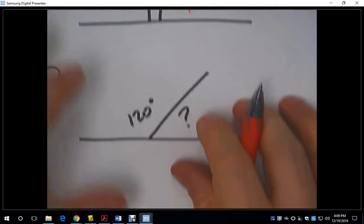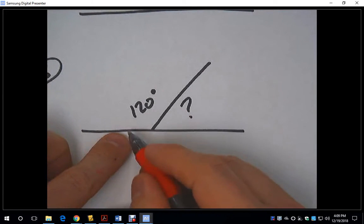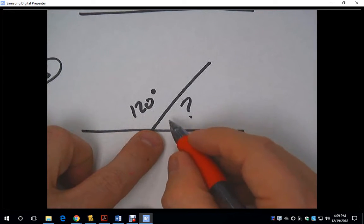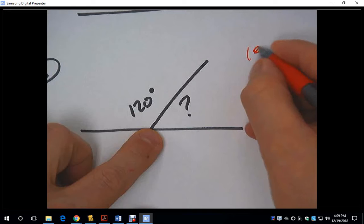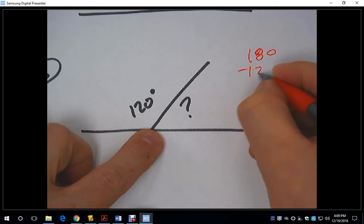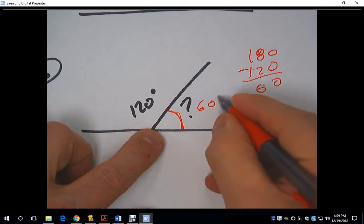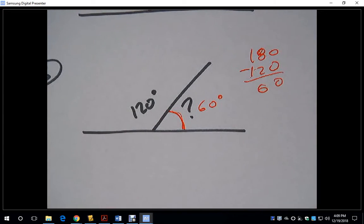One more. Here we have a linear pair. We have this angle of 120 degrees with our missing angle here. We're going to take 180 and subtract 120. That gives us 60. This missing angle right here, this rotation, is 60 degrees. I hope that was helpful.